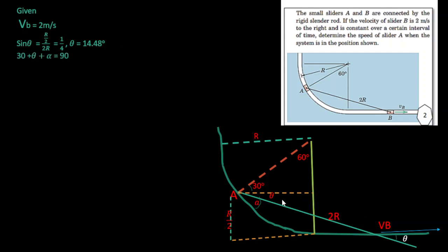After this, 30 plus theta plus alpha equals 90. Then alpha equals 90 minus 30 minus 14.48, so 30 is already given here.